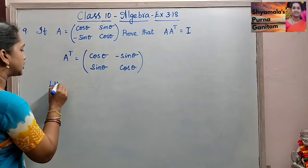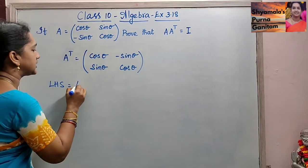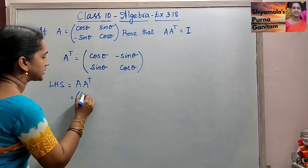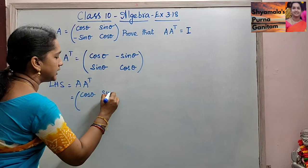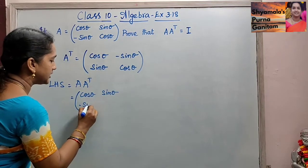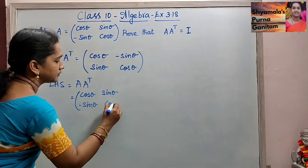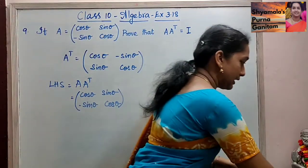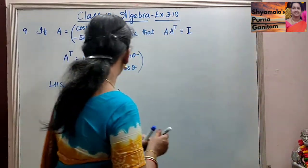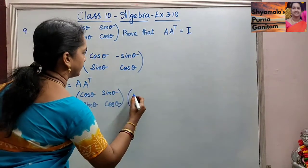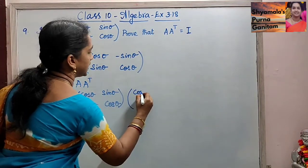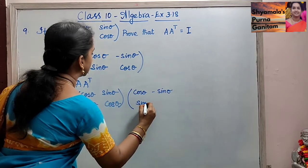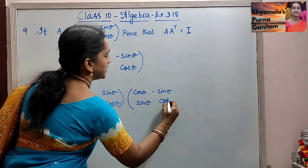Now we will multiply. So LHS is A into A transpose. A is given as [[cos theta, sin theta], [-sin theta, cos theta]], and the transpose of this will be [[cos theta, -sin theta], [sin theta, cos theta]].